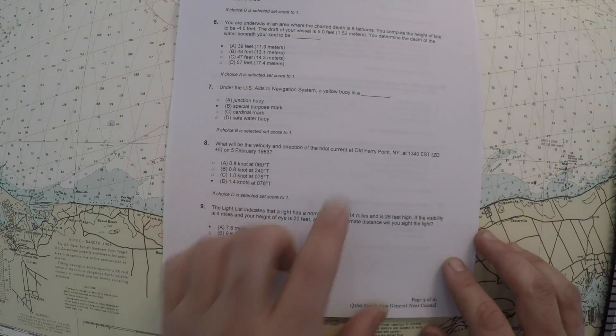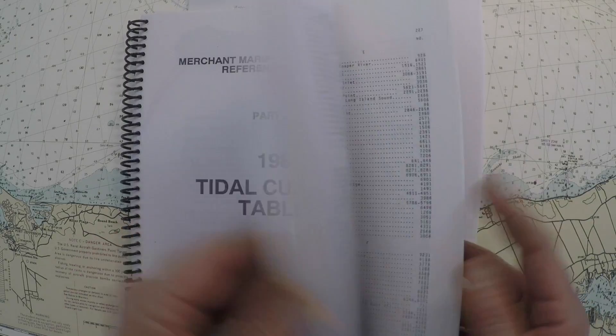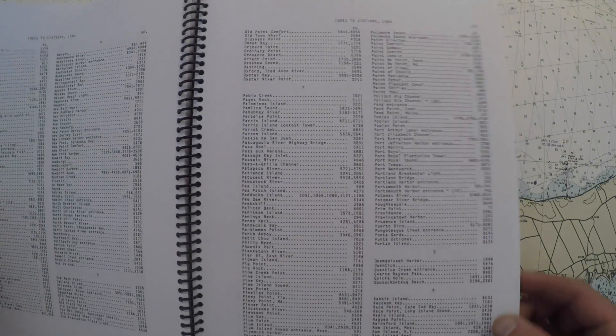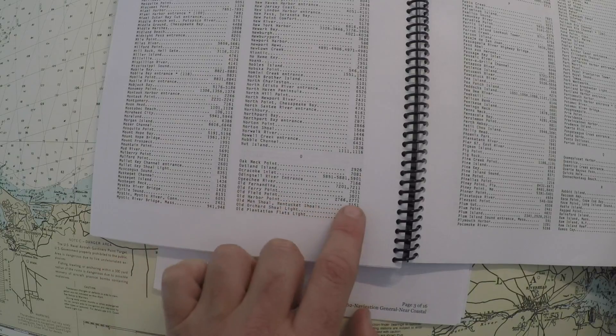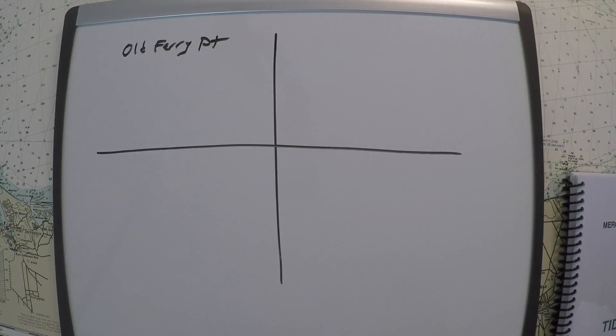So in this case, we're looking for Old Ferry Point. It's in New York. I have no idea where that really is. So I'll use the tidal current tables. And in the back of it, I'll just look up Old Ferry Point. So it looks like it's reference station 3071.